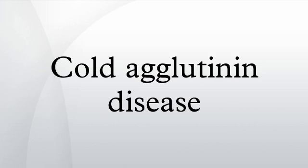Cold agglutinin disease is an autoimmune disease characterized by the presence of high concentrations of circulating antibodies, usually IgM, directed against red blood cells. It is a form of autoimmune hemolytic anemia, specifically one in which antibodies only bind red blood cells at low body temperatures, typically 28-31 degrees Celsius. It was first described in 1957.